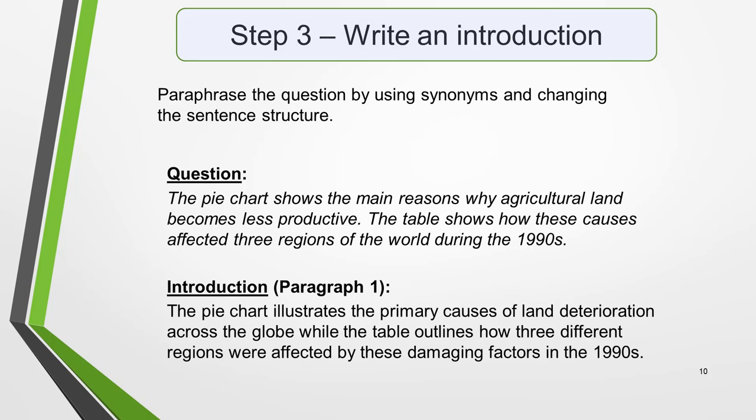You can paraphrase by using synonyms and changing the sentence structure. For example, here's the question: 'The pie chart shows the main reasons why agricultural land becomes less productive. The table shows how these causes affected three regions of the world during the 1990s.' And this is how you could write the introduction: 'The pie chart illustrates the primary causes of land deterioration across the globe, while the table outlines how three different regions were affected by these damaging factors in the 1990s.' That's all you need to do for the introduction.